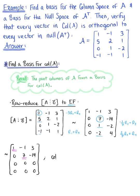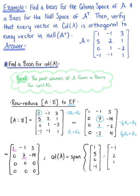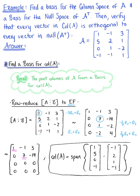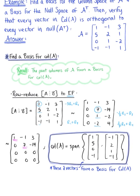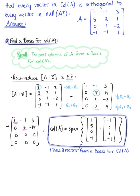Therefore, the column space of matrix A is equal to the span of the two pivot column vectors from the original matrix A: the vector (1, 5, 0, -1) and the vector (-1, 2, 1, -1). These two vectors in the spanning set form a basis for the column space of matrix A.